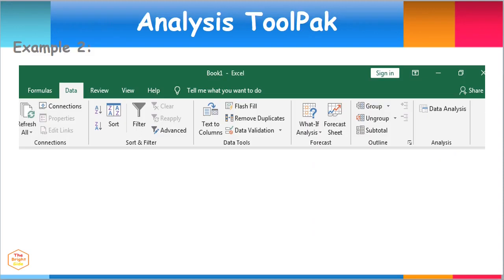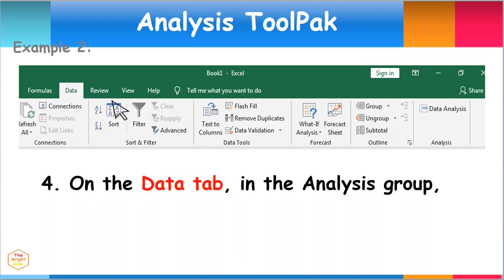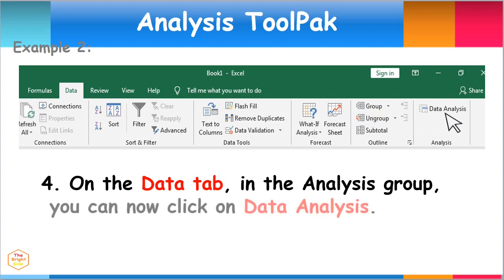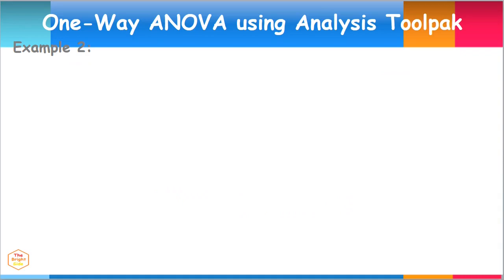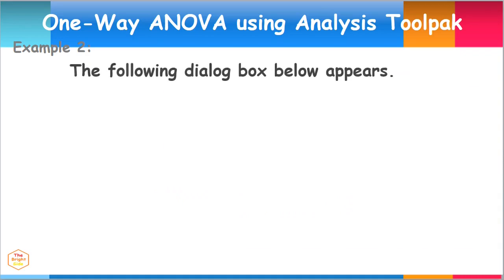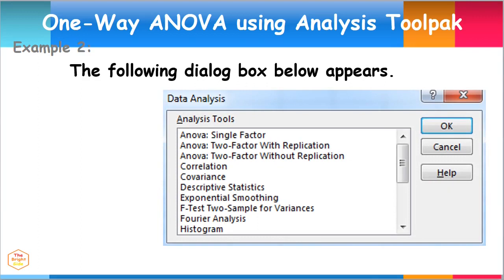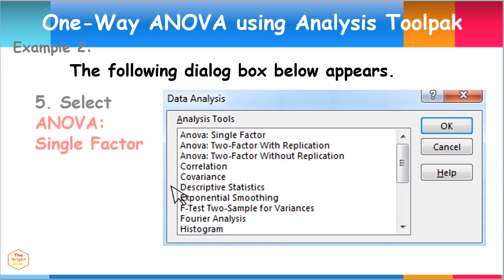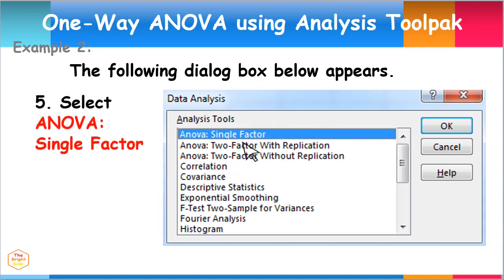Now that the ToolPak has been added, click on the Data tab menu. Then in the Analysis group found on the far right side of the menu, click on Data Analysis. After selecting the Data Analysis tab, the following dialog box appears. From the choices of different analysis tools, select ANOVA Single Factor and click OK.